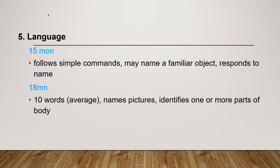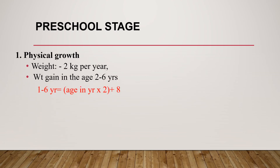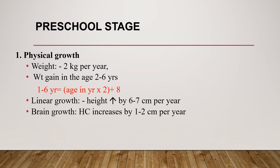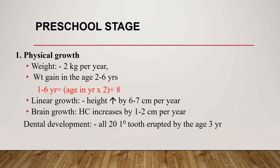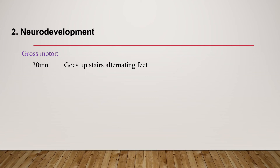At 24 months, toddlers put two words together. At preschool age, physical growth: weight increases two kilograms per year. Weight from two to six years is estimated by age in years times two plus eight. Height increases by six to seven centimeters per year. Head circumference increases by one to two centimeters per year. Brain growth decreases. All primary/milk teeth are erupted by the age of three years.